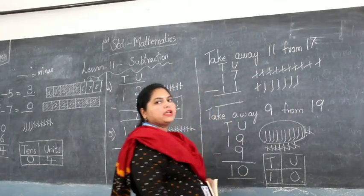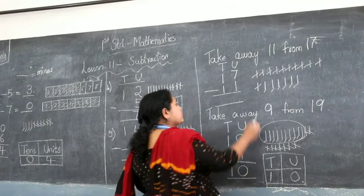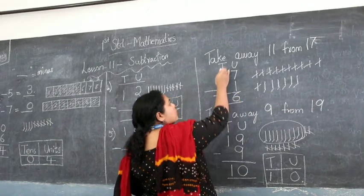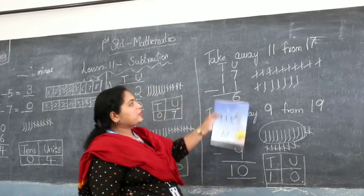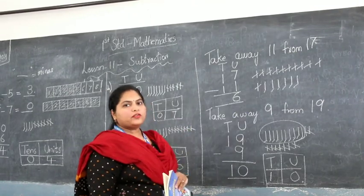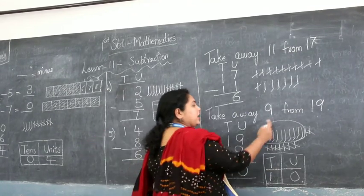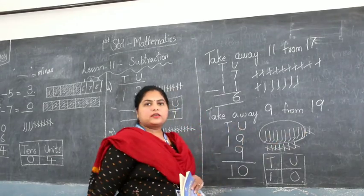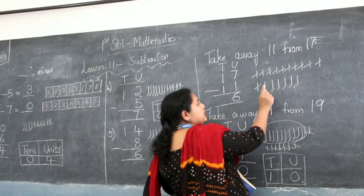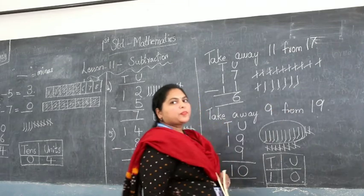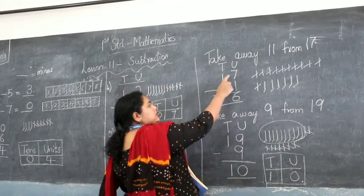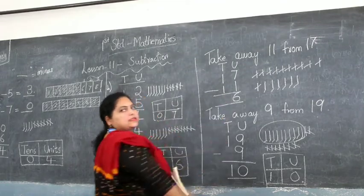I am left with 6. So it is 6 units and 0 tens, because I am not left with any group of 10 lines. Here we have left with only up to 6 — no group of 10. So we are left with 6 units. 17 minus 11 is 6.